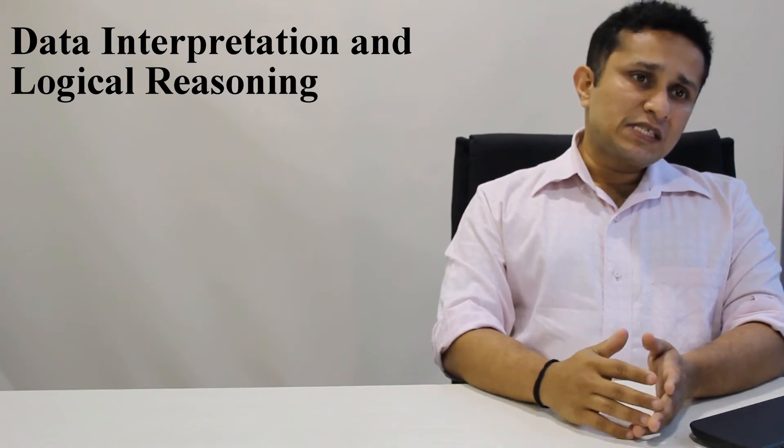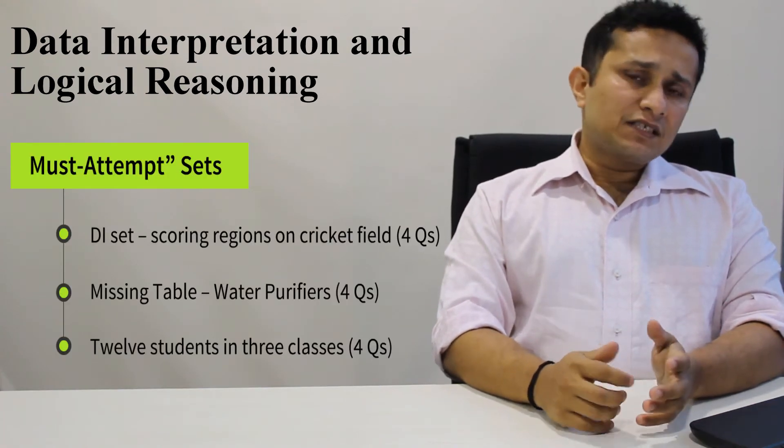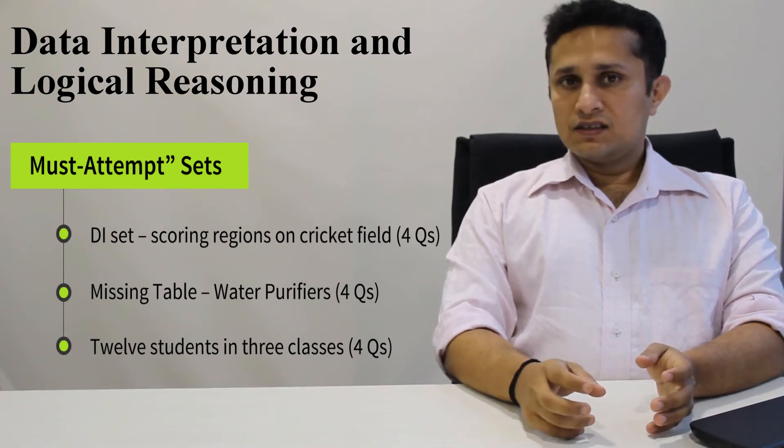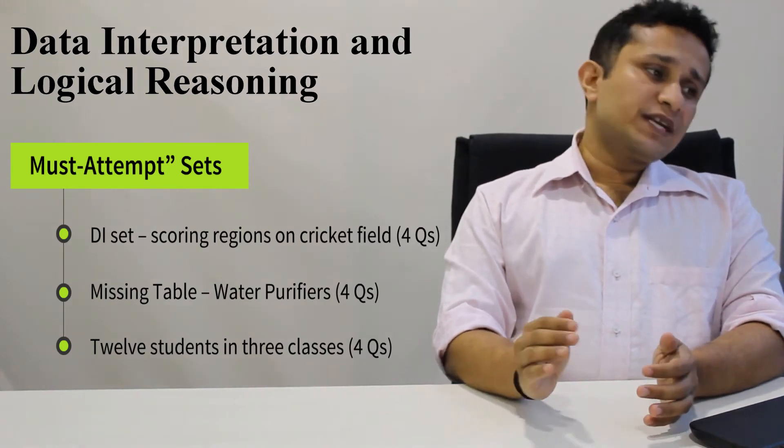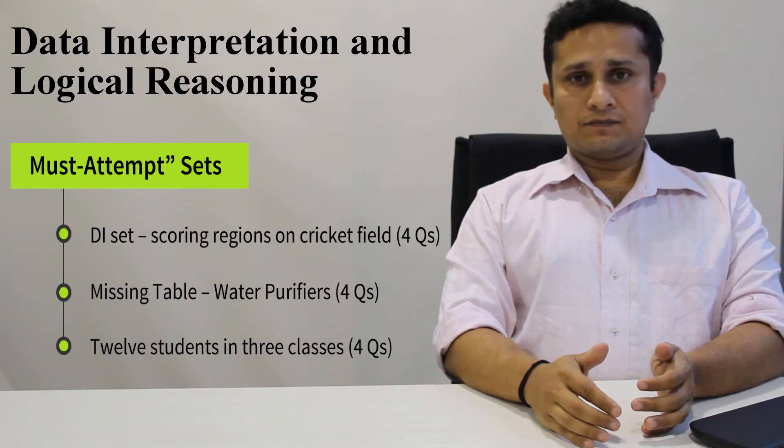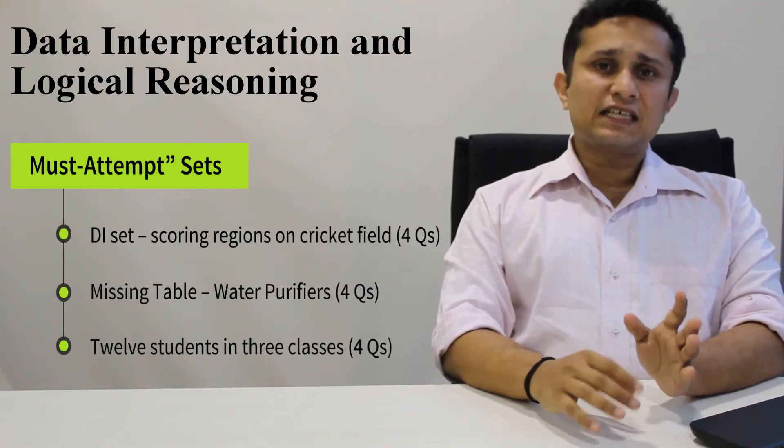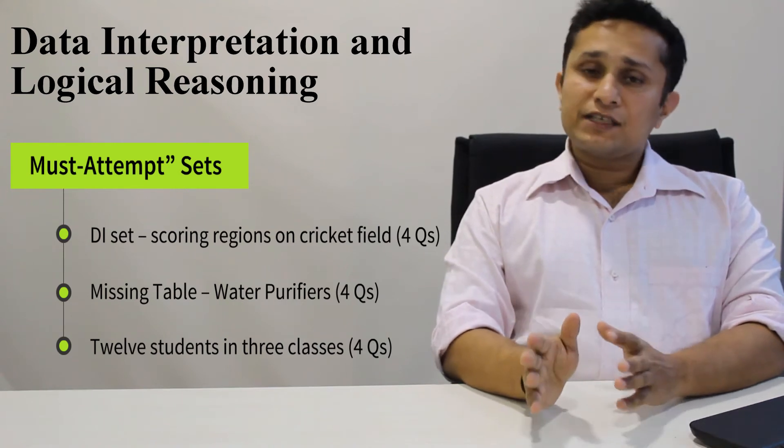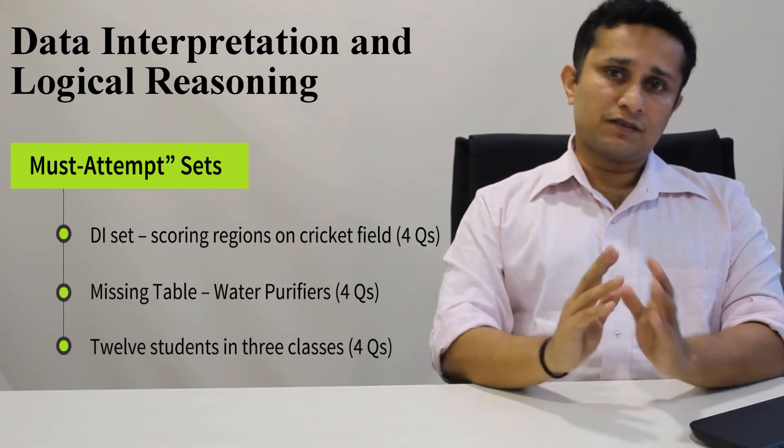There was one set on pie charts related to scoring on different regions of a cricket field. This was something that should definitely have been attempted. It was a very easy set, calculation based. With the help of the calculator that you have, this is something that should definitely have been done.